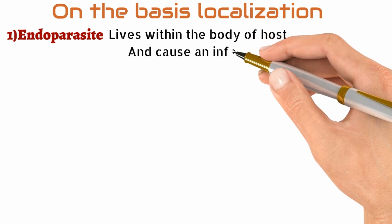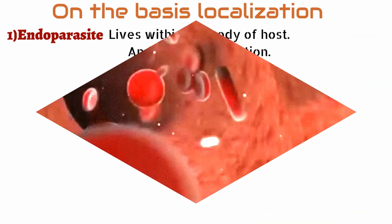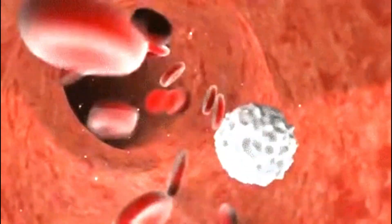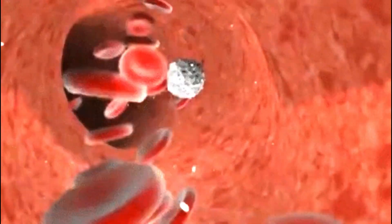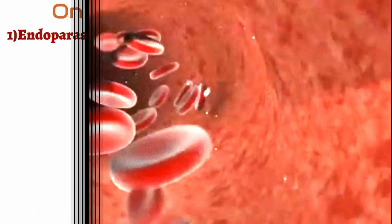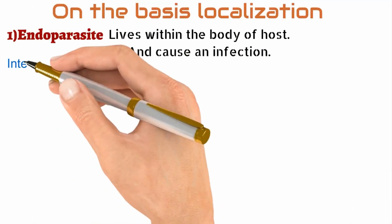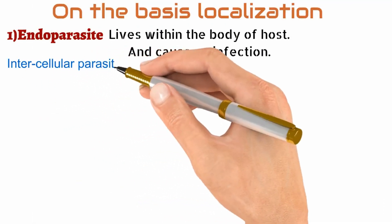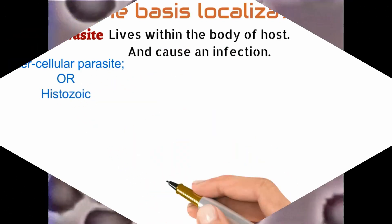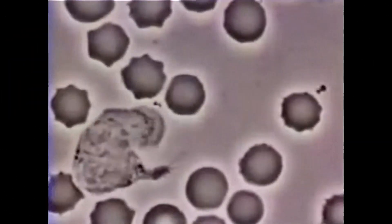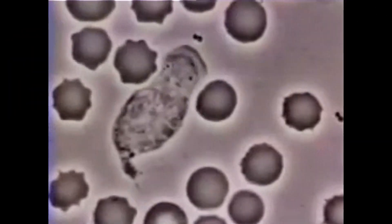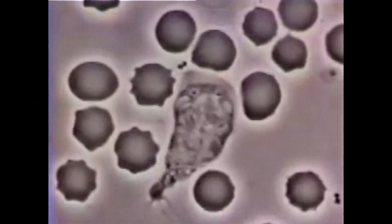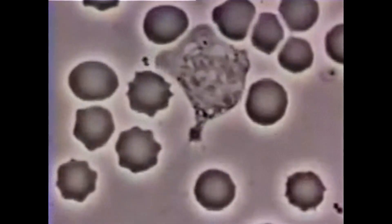On the basis of localization, number one are endoparasites — a parasite which lives within the body of the host and seeks to cause an infection is called an endoparasite. Examples include Trypanosoma. There are three types of endoparasite. Intercellular parasites are parasites that live between the spaces of the host cell, for example Entamoeba histolytica.